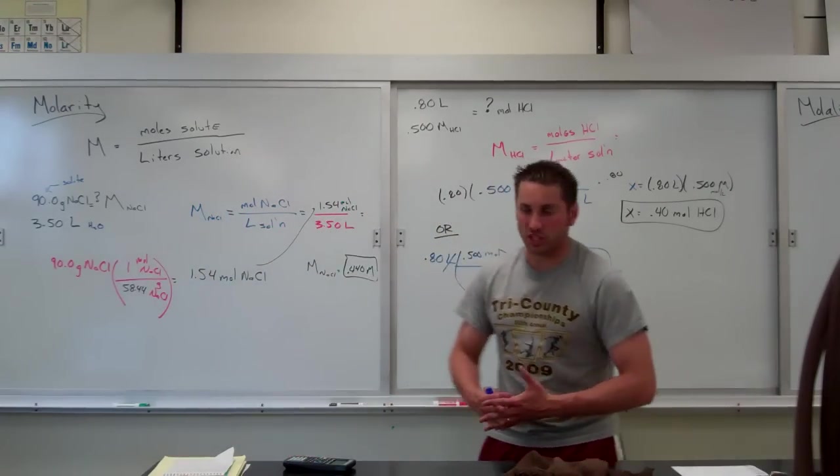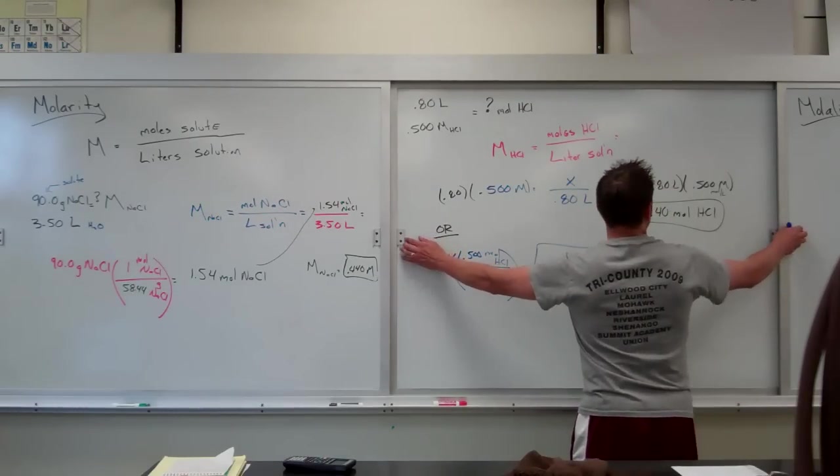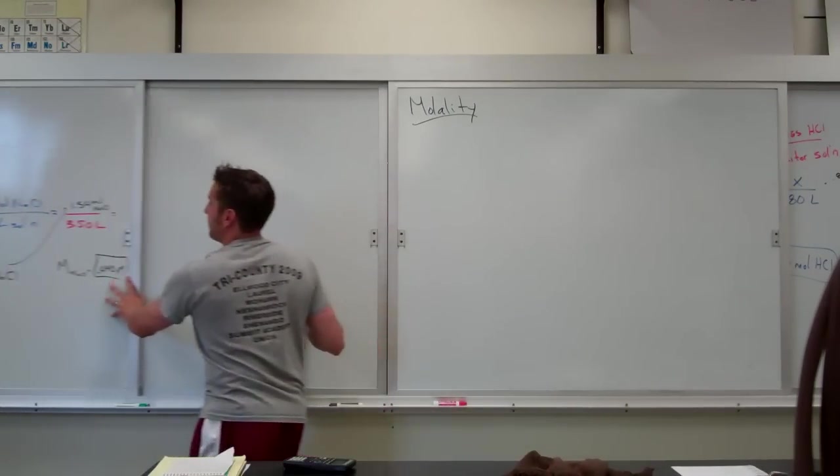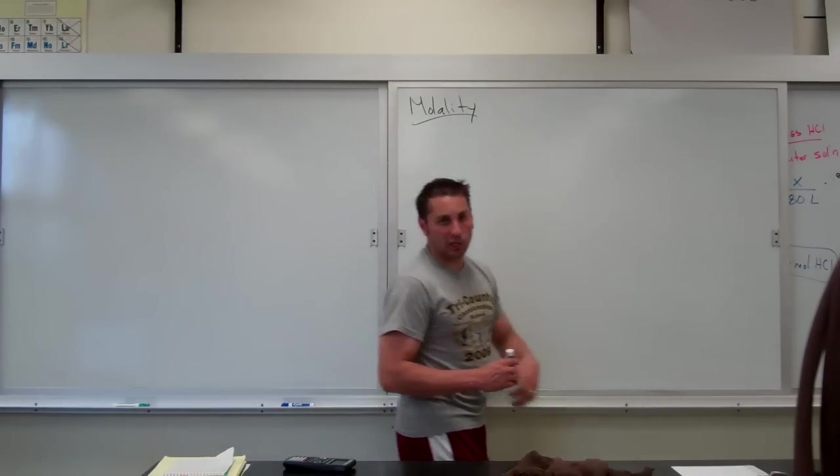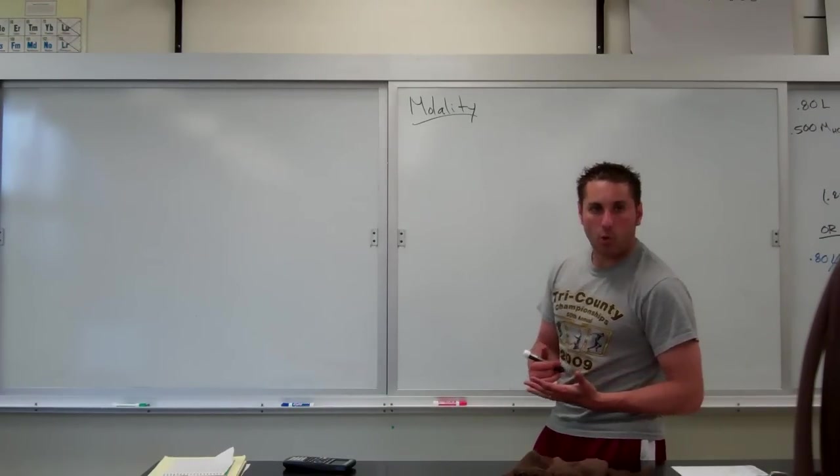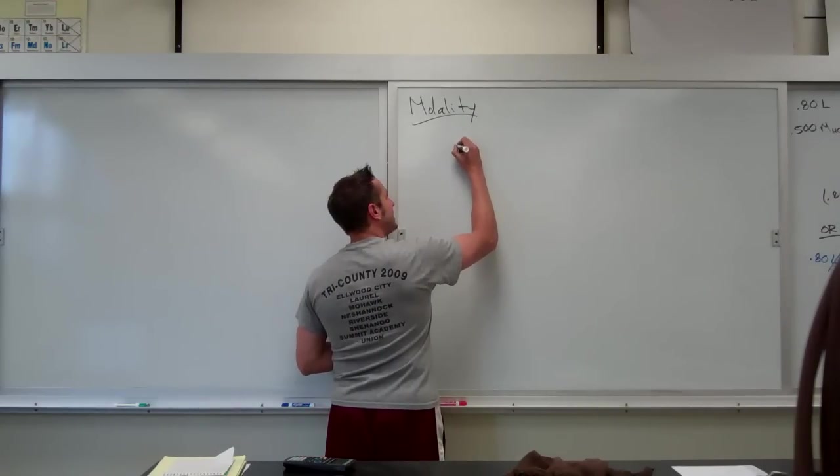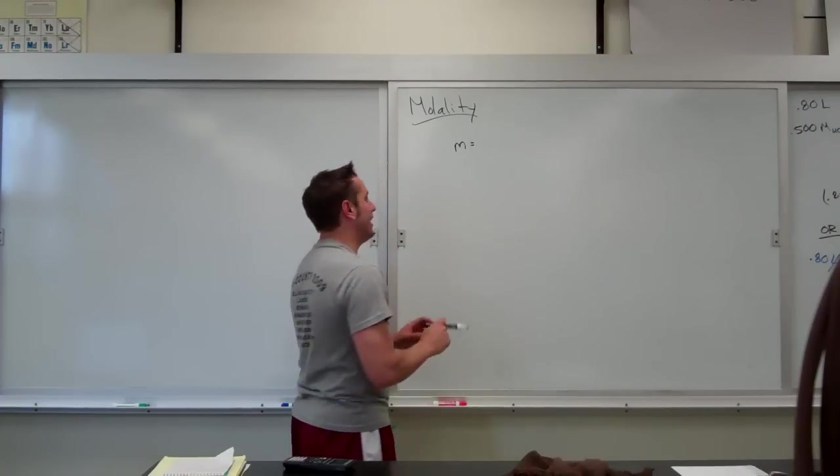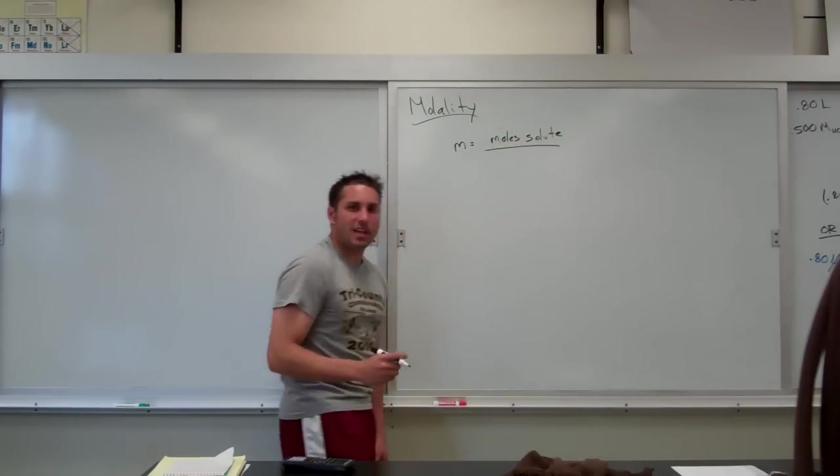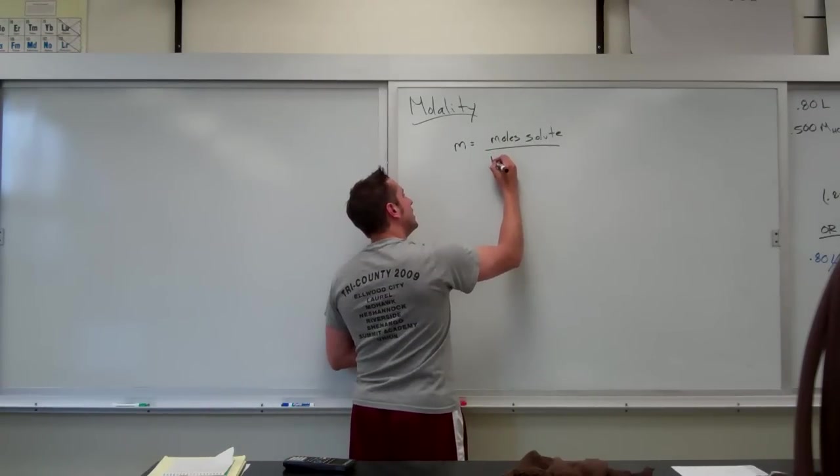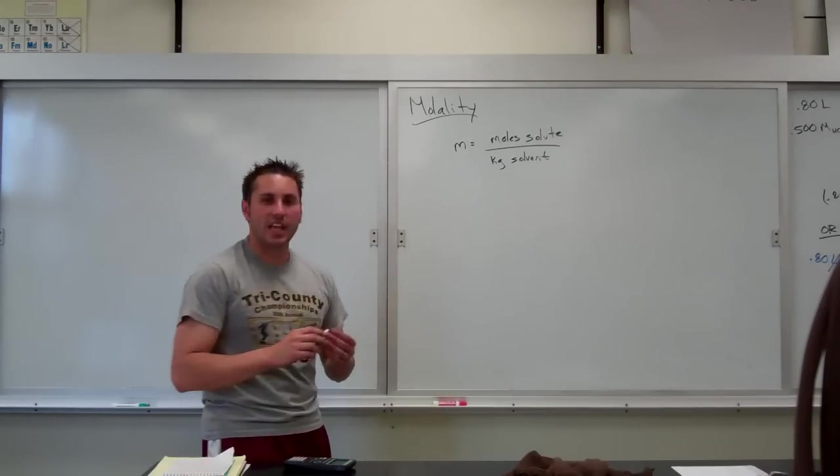So those are both molarity type questions. And molarity type questions is one of the three ways to find concentration. The second type of problem is a molality problem. M-O-L-A-L-I-T-Y. These are very similar in how they are found. There is just a different equation for molality. Molality is a lowercase m instead of a capital M. And molality stands for, again, moles of solute. But this time, instead of liters of solution, it is kilograms of solvent.